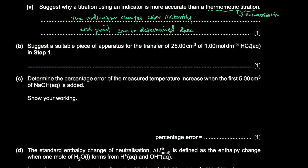A suitable piece of apparatus for transferring 25 cm³ of 1 mol/dm³ HCl is a 25 cm³ volumetric pipette. The word 'volumetric' means it takes a single reading for that specific volume.